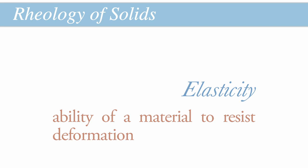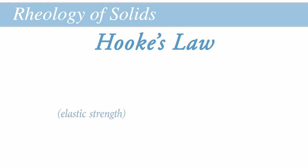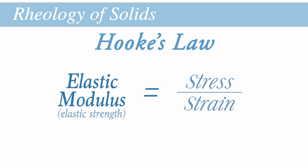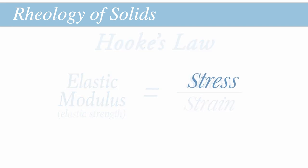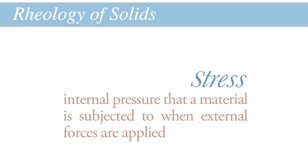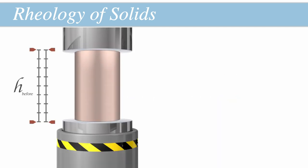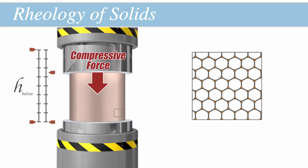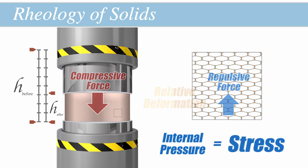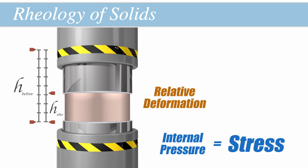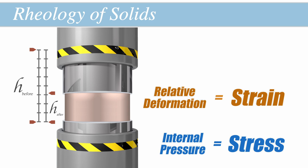The degree to which a material can resist deformation is defined by Hooke's law, which states that the elastic strength of a material — a measure known as the elastic modulus — is equal to the ratio of the stress that must be applied to a material over the strain induced in that material. In rheology, stress can be thought of as the internal pressure that a material is subjected to when external forces are applied. If a solid square object is exposed to an external compressive force as it's squeezed, the molecules within that solid are pushed together until their repulsion offsets the external compression. The relative deformation that has occurred by the time this repulsive force offsets the external compression is known as the strain — simply a measure of how much an object's dimensions have changed, defined as the ratio of the solid's height after compression to what it measured before compression.